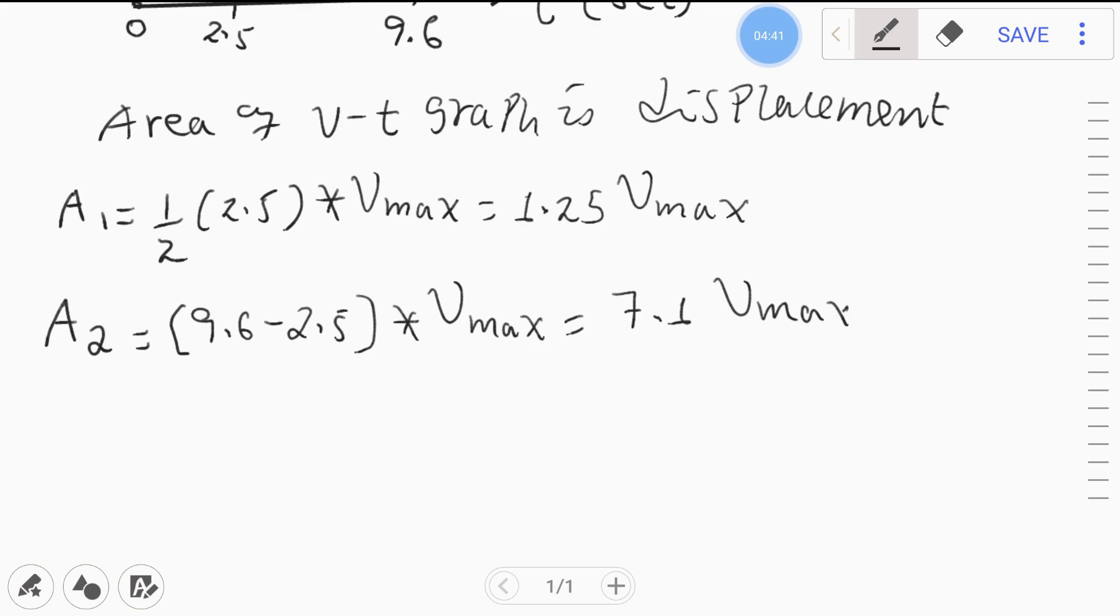Now what is the total area? The total area equals A1 plus A2. So we'll sum up the two parts, then we can get 8.35 v_max. This is the overall area, but area and displacement is equal.